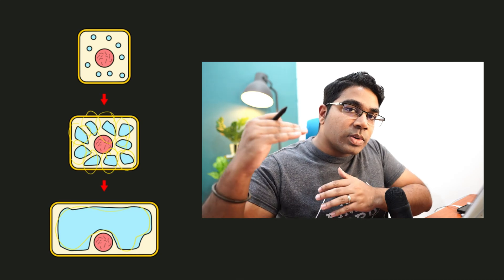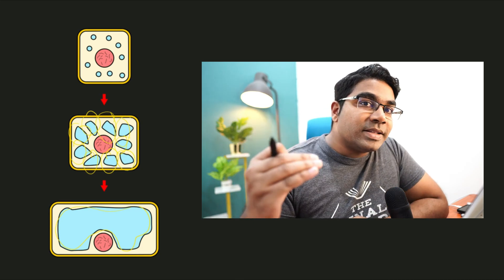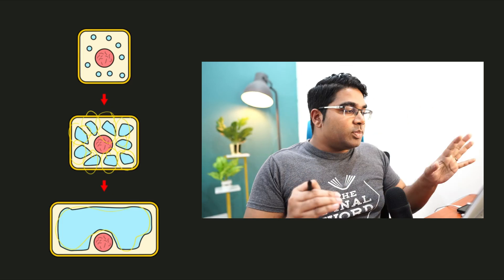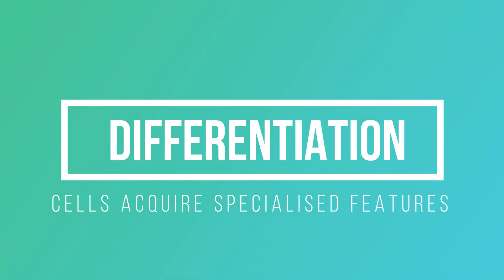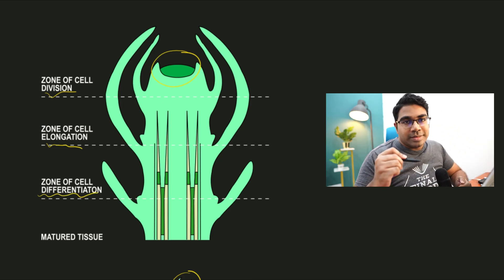Once the number of cells has increased and cell size has reached a certain level, it's time to specialize. At this point the cell has no specific function yet — it is just a general cell. What happens next is that this general cell develops certain special characteristics in order to perform specific functions. This process is known as differentiation.